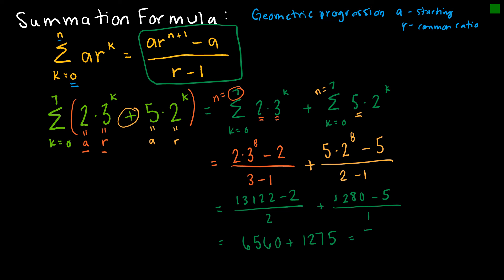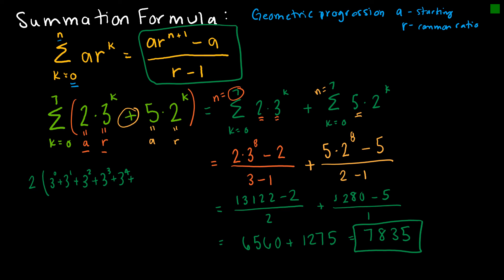The first term simplifies to 6,560 and the second to 1,275. Adding those together gives 7,835. This is much faster than manually computing 2 times 3 to the 0 plus 3 to the 1 plus 3 to the 2, and so on through 3 to the 7th, then repeating the process for 5 times 2 to the 0 through 2 to the 7th. Instead of all that work, I can just use the summation formula.